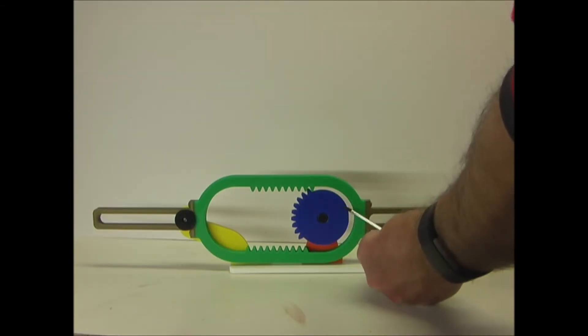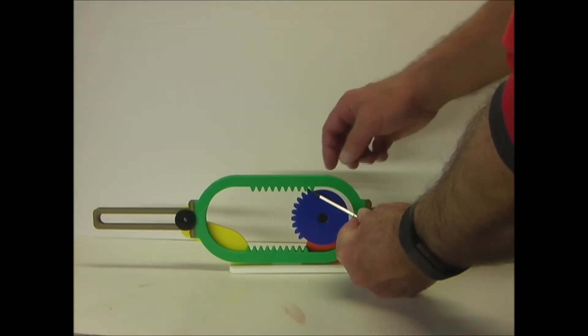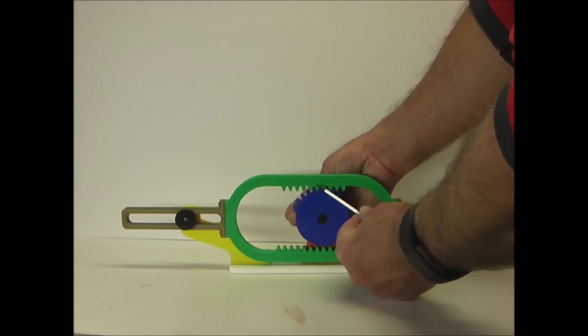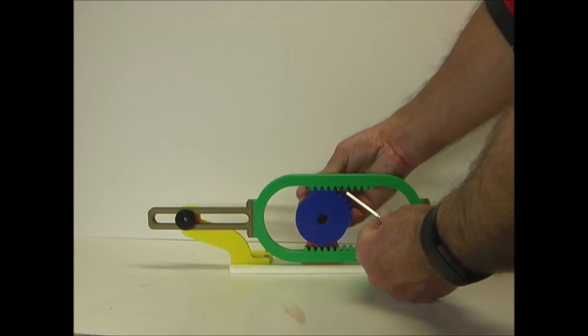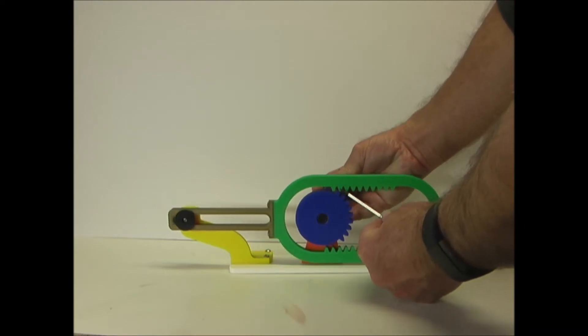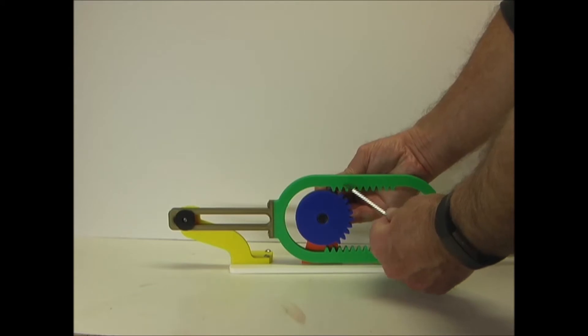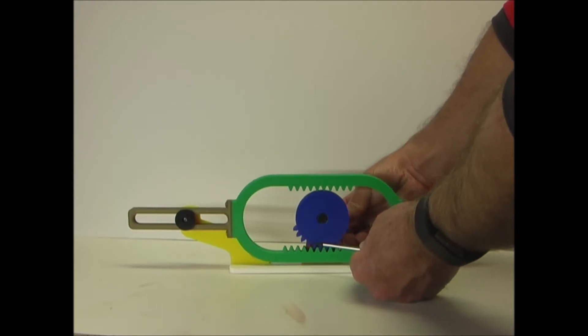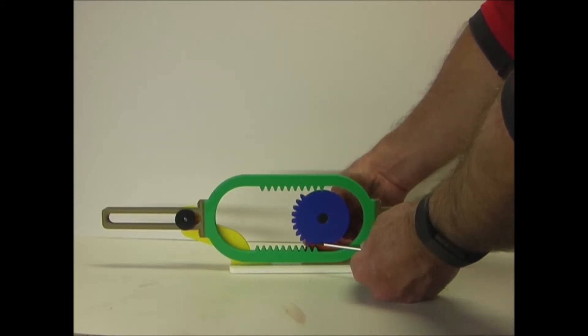As the pinion is turned, this tooth catches on the upper rack, moving this rack and slider all the way to the right until this tooth disengages with the top, and then the bottom one engages, moving the rack to the left.